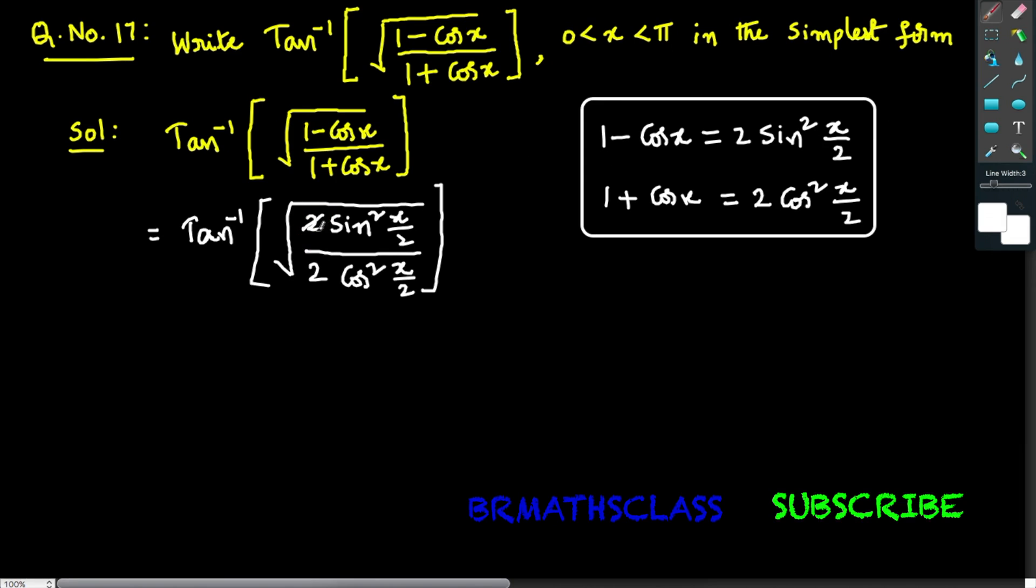Now you see, the 2 in the numerator and denominator will get cancelled. That equals tan inverse of... you observe here sin squared (x/2) divided by cos squared (x/2). We know that this can be written as tan squared (x/2).